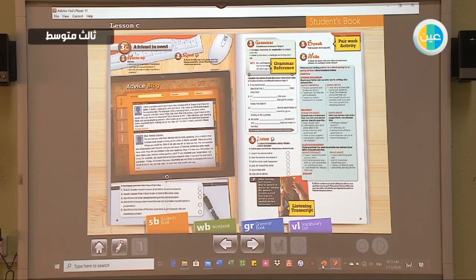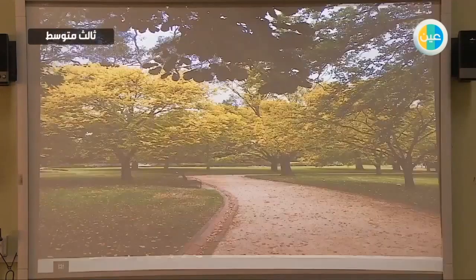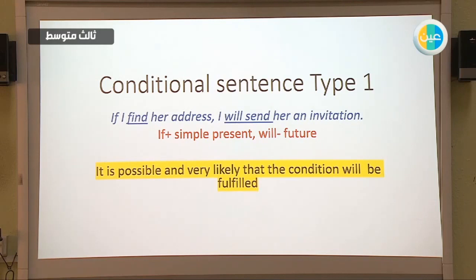I'm sure that you all know the conditional sentence type 1. Let's make a quick revision for it. For example, if I say: 'If I find her address, I will send her an invitation.' To form the conditional sentence type 1, we use 'if' plus simple present — which is 'find' here — then in the main clause, we use 'will' and the future tense.